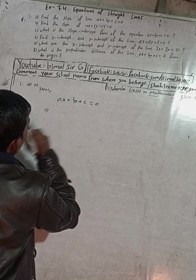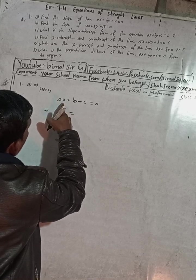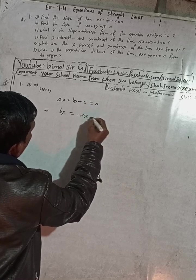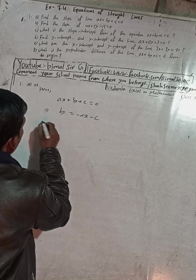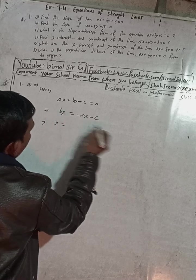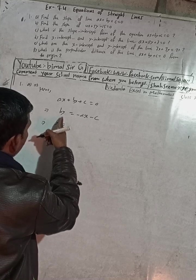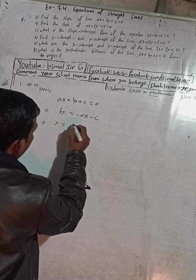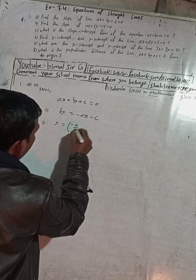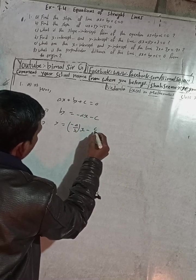I will keep by on the same side and move ax to the other side as -ax, and +c becomes -c. Then dividing both sides by b: cancelling gives y = (-a/b)x - c/b.